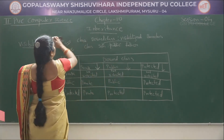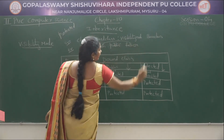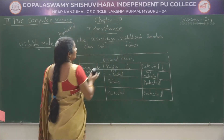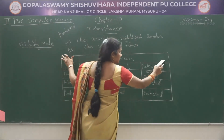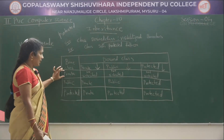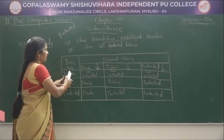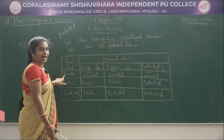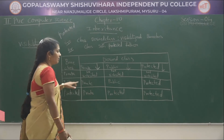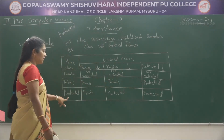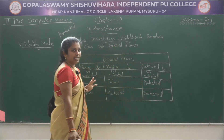For protected inheritance, the syntax is the same: class, derived class, colon, visibility mode, then base class, with visibility mode written as protected. Three points: if the base class members are private, they cannot be inherited in the derived class; if the base class members are public, they become protected in the derived class; if the base class members are protected, they also become protected in the derived class.